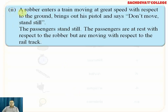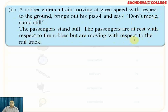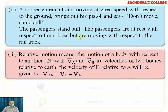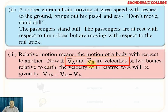A robber enters a train moving at great speed with respect to the ground, brings out his pistol and says, 'Don't move, stand still.' The passengers stand still. The passengers are at rest with respect to the robber, but are moving with respect to the rail track. Relative motion means the motion of a body with respect to another body. Suppose va and vb are the velocities of two bodies — these are the original velocities relative to earth.